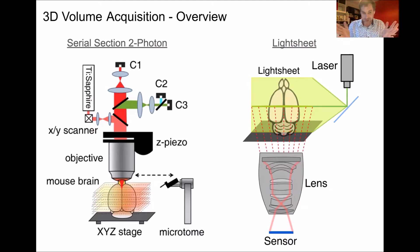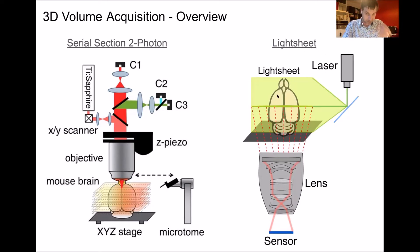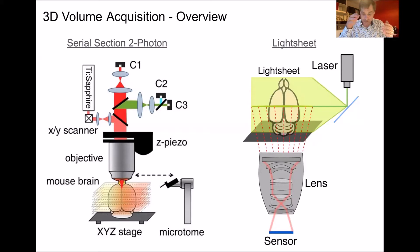The next step is to use a method to reconstruct the brain in 3D. The two methods I've been using are the serial section two-photon microscopy method, shown schematically here on the left, and more recently moving towards using a light sheet, which uses tissue clearing and then a light sheet microscope to image the tissue. Both of these result in a 3D dataset where you can essentially continuously scroll through the brain, as you'll see in a moment. They both have different caveats to their technique, which I'll discuss next.